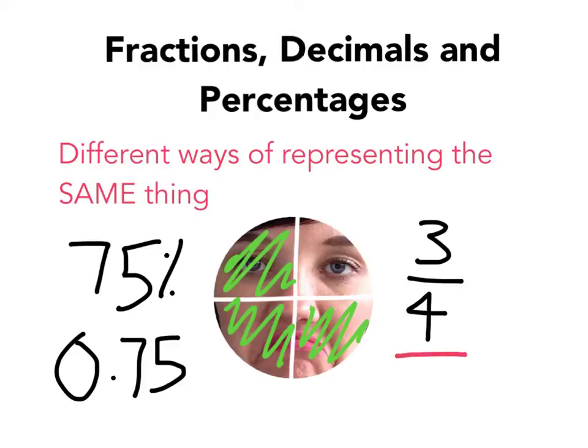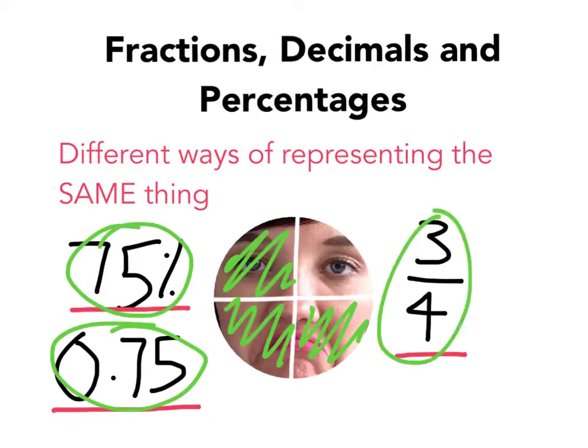Fraction. Percentage. Decimal. 1, 2, 3. Or 1, 2, 3. Are just three different ways of representing this guy.